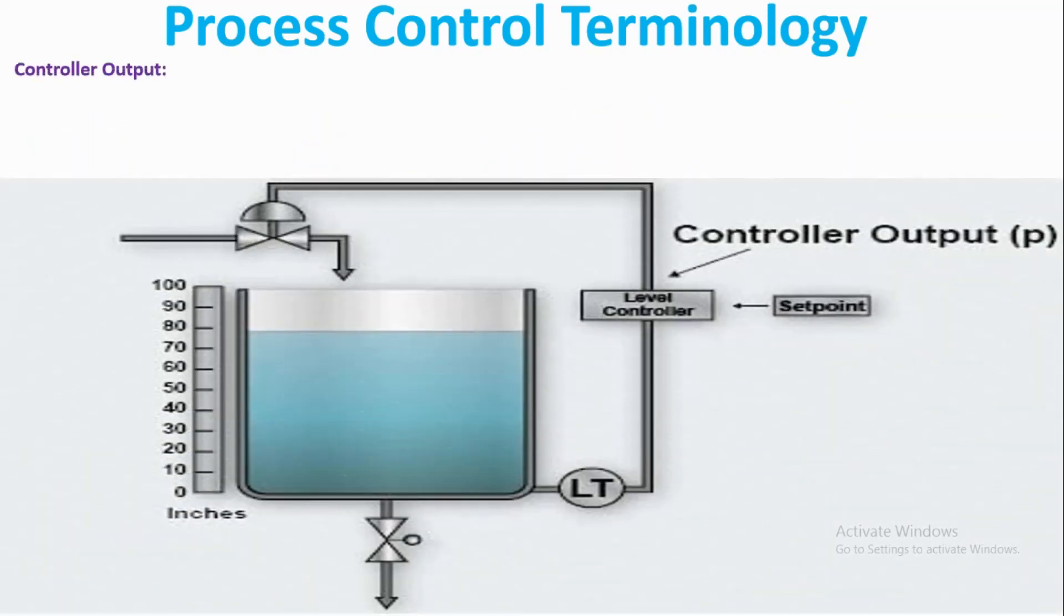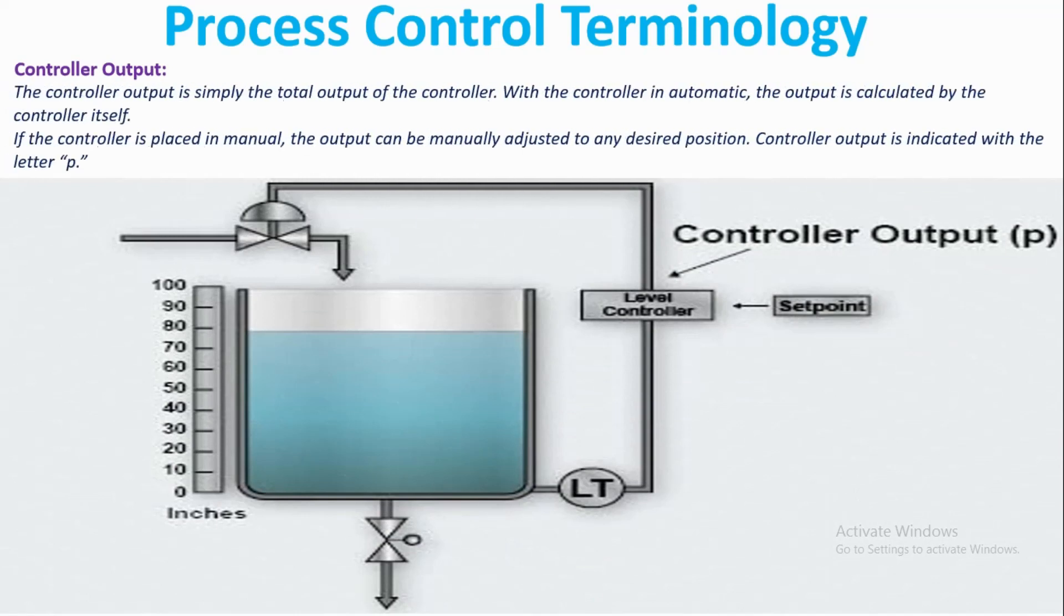Now we will see what controller output is. The controller output is simply the total output of the controller. With the controller in automatic, the output is calculated by the controller.